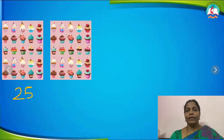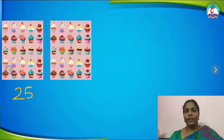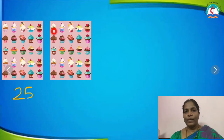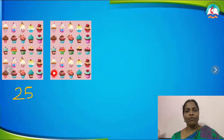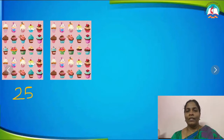Good. We have counted 25, so we have to count after 25. After 25: 26, 27, 28, 29, 30, 31, 32, 33, 34, 35, 36... 45, 46, 47, 48, 49, 50. This box also has 25. When we add 25 and 25 together, we will get 50 cupcakes.